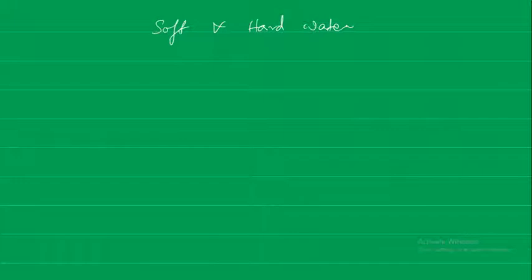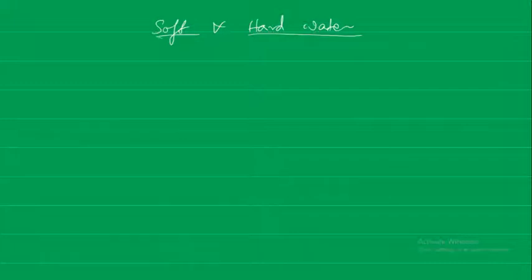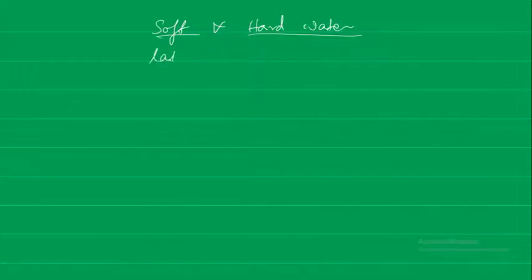Now let us look at soft and hard water. Water is said to be soft if it readily forms lather with soap. Generally, when we wash our hands with soap using borewell water from underground, we see a deposition of a lot of salts in our buckets — that is because of a high amount of dissolved salts. We say that it is hard water, and hard water does not form a lot of lather with soap; the foaming will not be there. Pure water or water containing sodium salts gives lather with soap and is said to be soft water.